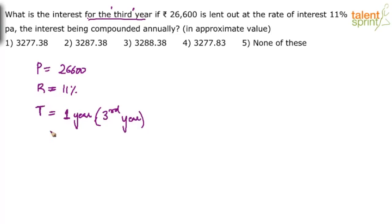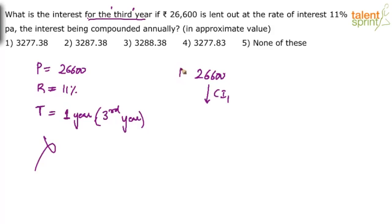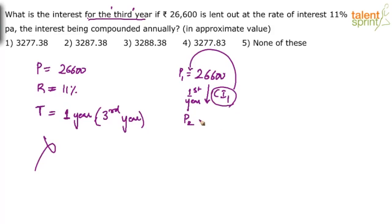We don't use the formula for this; let's go by the concept of compound interest. There is a principal amount of 26600. This principal will earn interest in one year. In compound interest, the interest of the first year gets added back to the principal amount to give the principal of the second year, which is P1 plus CI1.